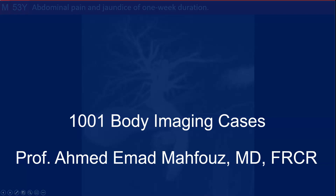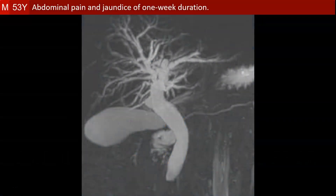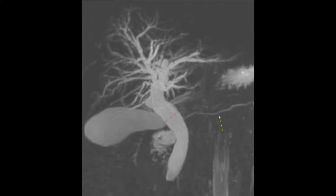Welcome to the body imaging cases. This is a 53-year-old male with abdominal pain and jaundice of one week duration. The MRCP — that's to say the magnetic resonance cholangiopancreatography — shows marked dilatation of the common bile duct down to its lowermost end, and also the intrahepatic bile ducts and the gallbladder, but normal caliber of the pancreatic duct.